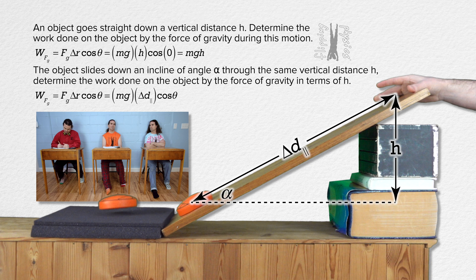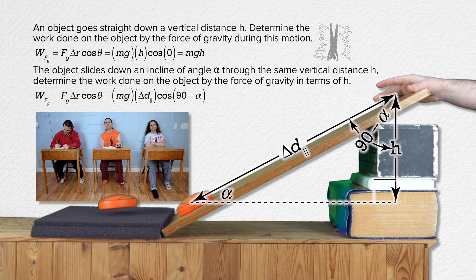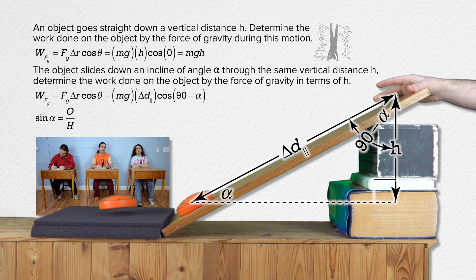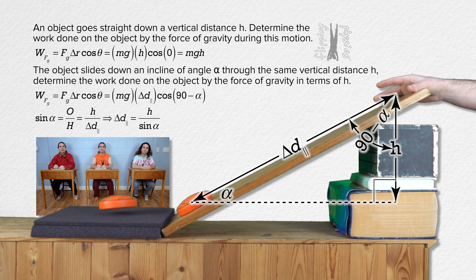The angle between the direction of the force of gravity, or straight down, and the direction of the displacement of the object, or down the incline, is 90 minus the angle alpha. We need a relationship between displacement parallel and height h. Sine of alpha equals opposite over hypotenuse, or h over delta d parallel. That means the displacement parallel equals h over sine alpha.